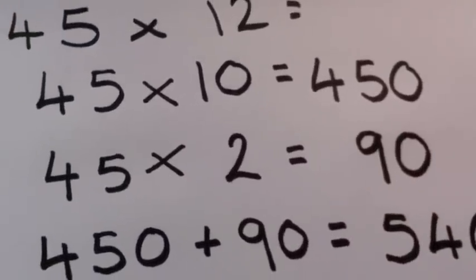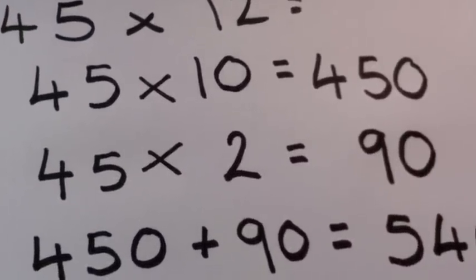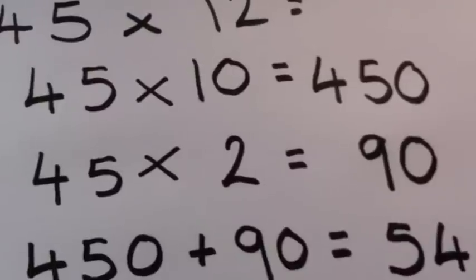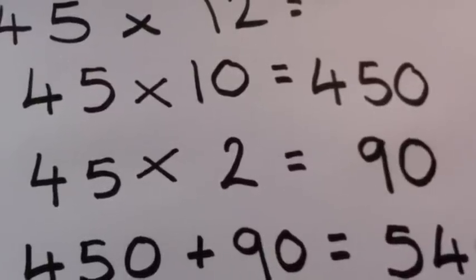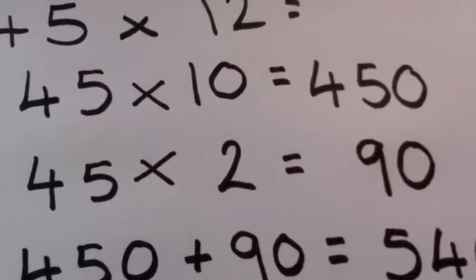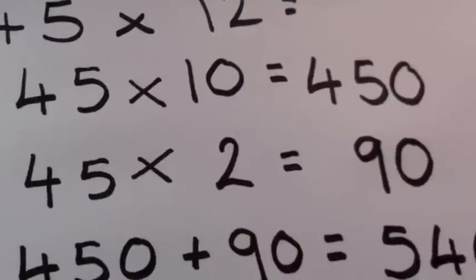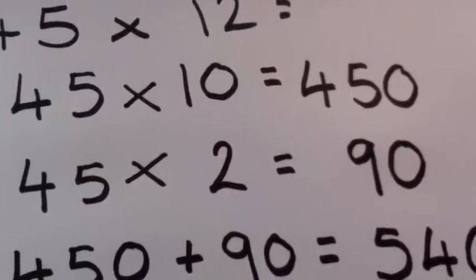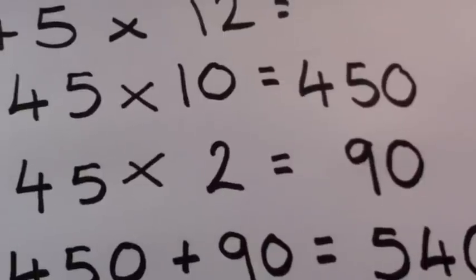Now for those, if you're not sure about 450 plus 90, just go up in tens. So you know there's another 50 to get to 500, and 50 from 90 leaves 40. So you should know that once you get to 500, you've got to put 40 more on.